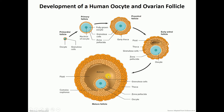There's also an antrum with lots of fluid in it. What is actually ovulated is that secondary oocyte. If the sperm is trying to fertilize that egg, it would have to go through the theca cells, the granulosa cells, the zona pellucida, and the cell membrane of the secondary oocyte. That's where all of those enzymes found on the acrosome cap of the sperm help.